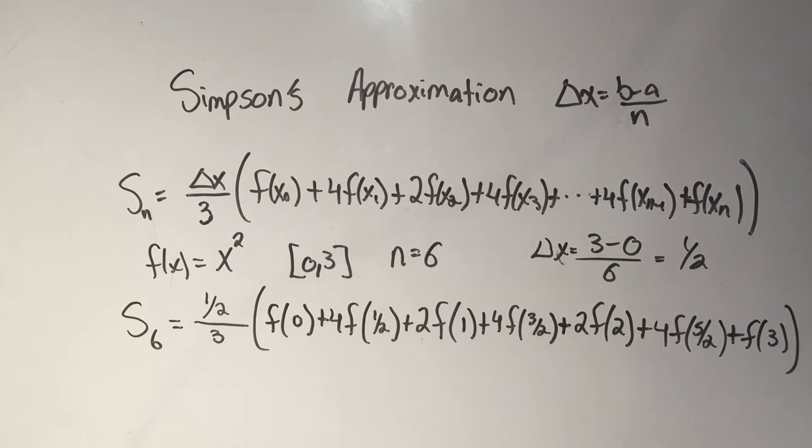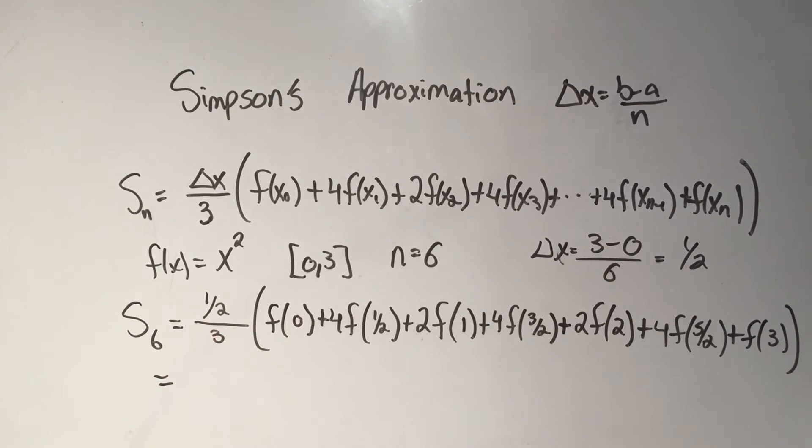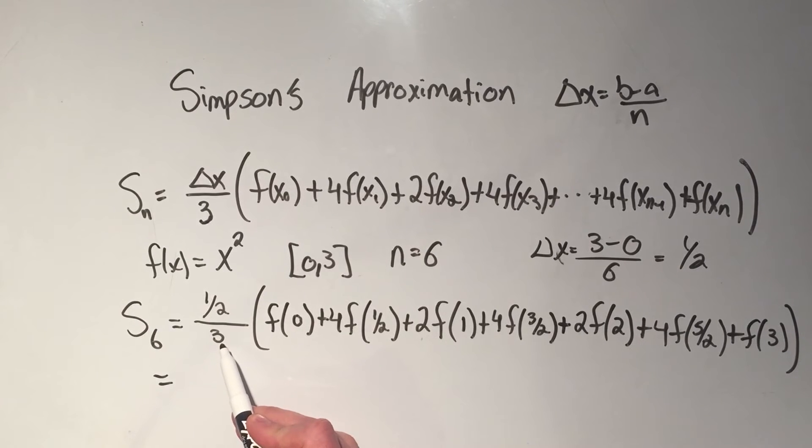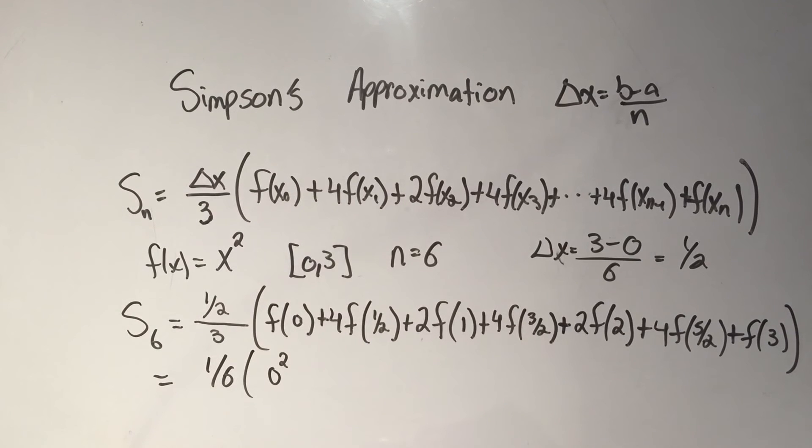That's the setup. Now I just need to plug all of these values into my function x squared. 1 half divided by 3, I think that's going to be a 6th. And then I do f of 0, so I plug 0 into my function, that's 0 squared,